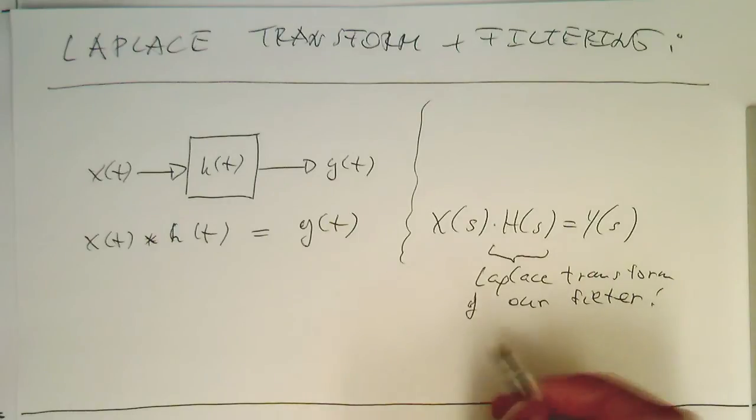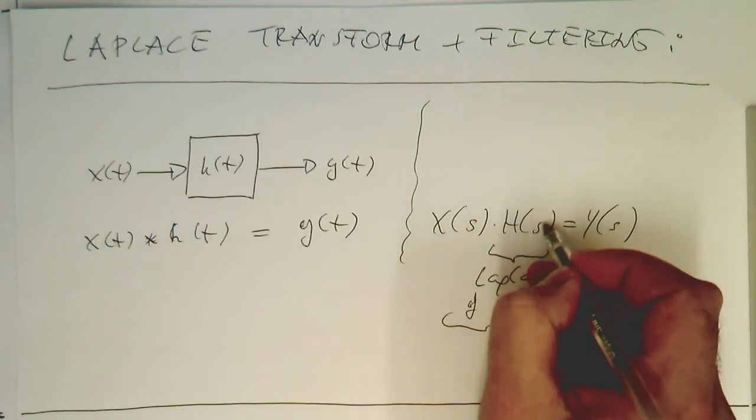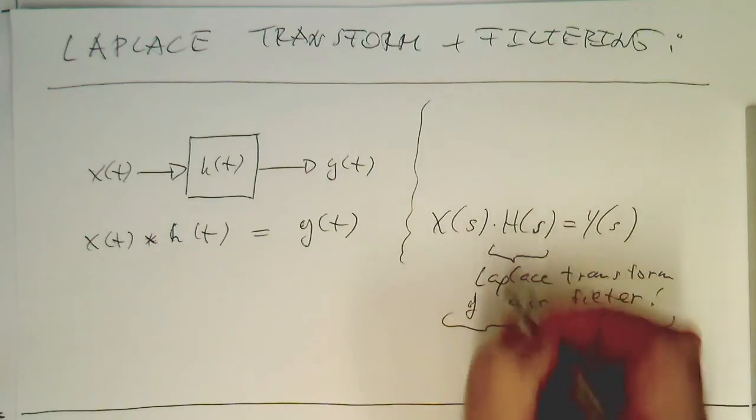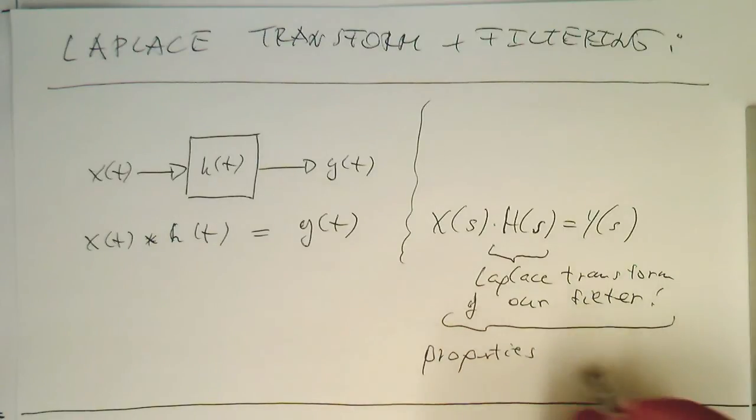The question is now, what kind of properties can we get out of this H of s here? Properties of H of s - are we getting some useful information out of this H of s about our filter?